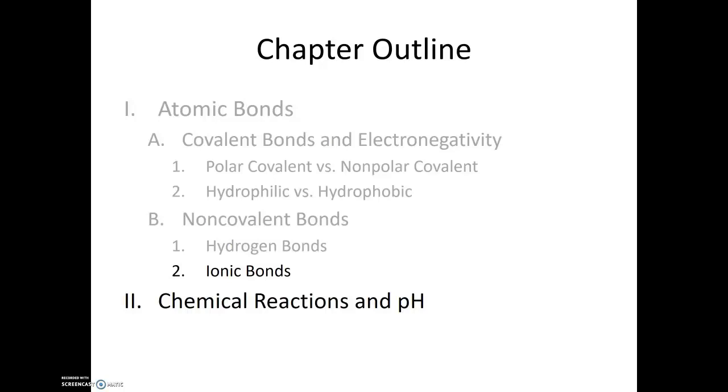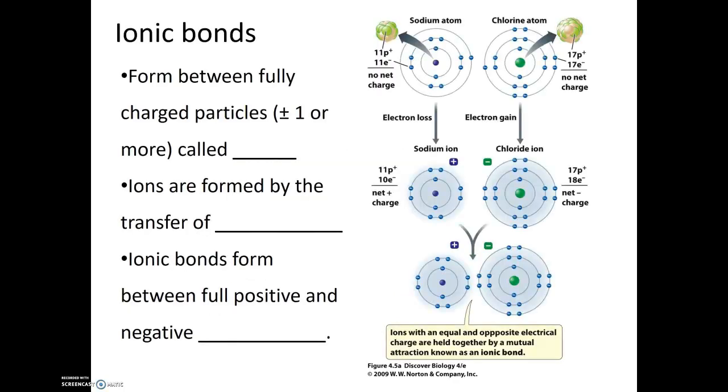Now that we've talked about hydrogen bonds, the next type of bond I would like to discuss are ionic bonds. Ionic bonds are formed between two fully charged particles or atoms, meaning these atoms have a full positive charge or a full negative charge, and we call those atoms ions. Ions are formed by the transfer of electrons.